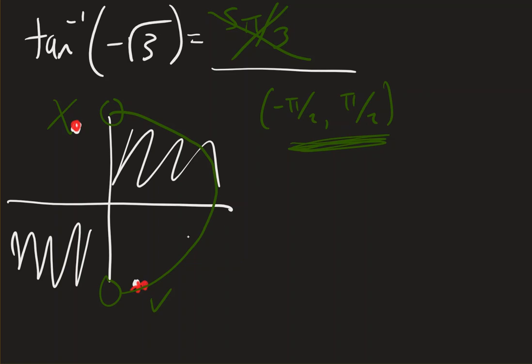So the way to say the same location between these two values would be to go this direction and call it negative pi over 3. And so that's the actual answer.